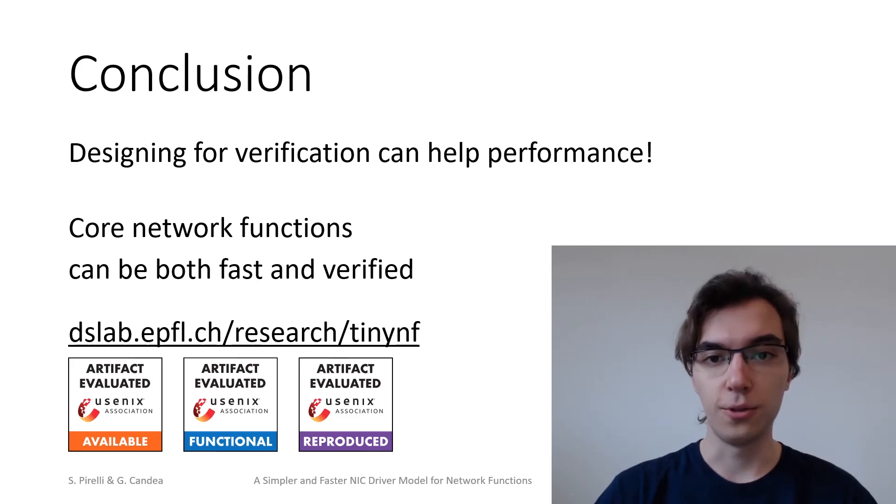We show that core network functions that form the backbone of the Internet do not have to choose between performance and verifiability. They can have both. Our code is publicly available, and we encourage you to use it for your own work on network functions or drivers. You can find it, along with more details, by following the link on this slide. Thank you.